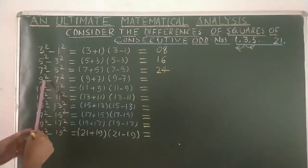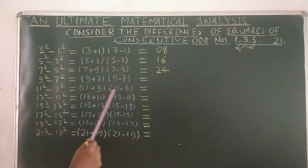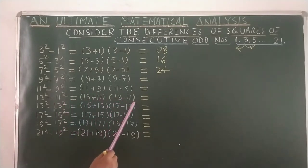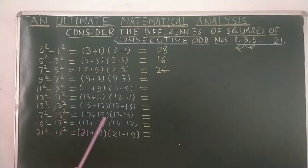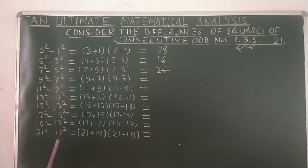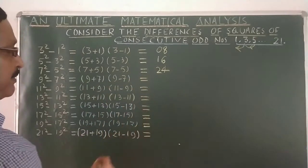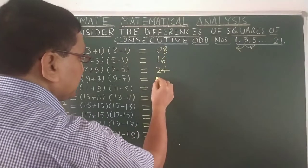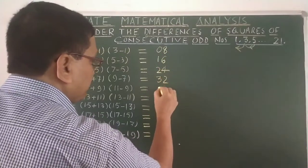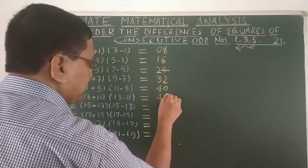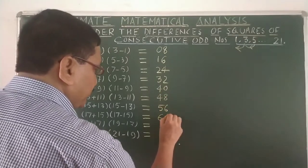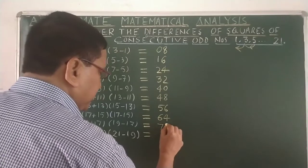Now similarly: 9 plus 7, 9 minus 7. Then 11 plus 9, 11 minus 9. Then 13 plus 11, 13 minus 11. Then 15 plus 13, 15 minus 13. Then 17 plus 15, 17 minus 15. Then 19 plus 17, 19 minus 17. And lastly 21 plus 19, 21 minus 19. Simplifying each, you get: 32, 40, 48, 56, 64, 72.